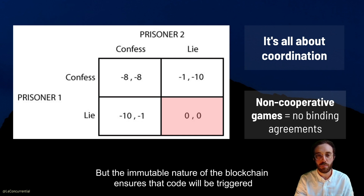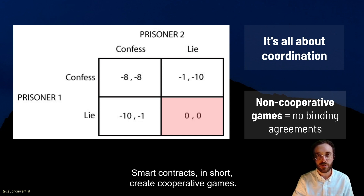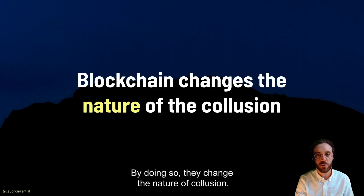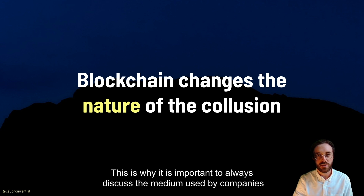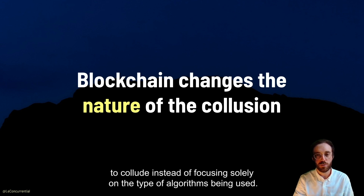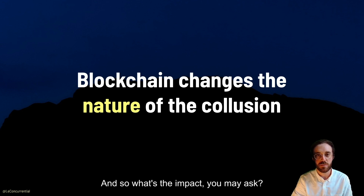But the immutable nature of the blockchain ensures that code will be triggered if the conditions are met. Smart contracts, in short, create cooperative games. By doing so, they change the nature of collusion. This is why it is important to always discuss the medium used by companies to collude, instead of focusing solely on the type of algorithms being used.